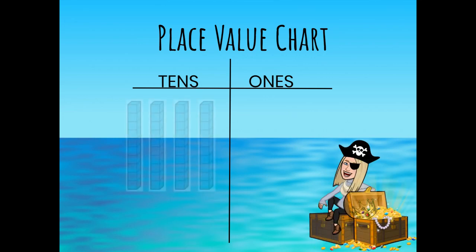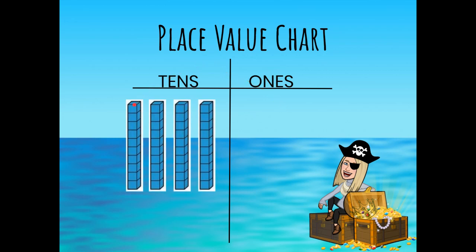Let's try one more. Here we're looking at four groups of ten, and we write that as a four in the tens place. This time I'm actually not going to put any ones at all. So if you are looking at an empty ones place, there is a number that we have learned in first grade — and that you actually learned in kindergarten — a number that represents nothing, and that is the number zero. So here we're looking at the number 40: 10, 20, 30, 40.